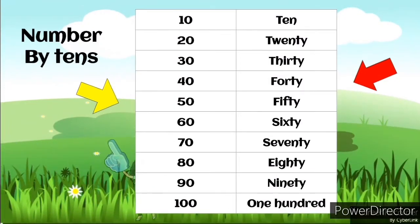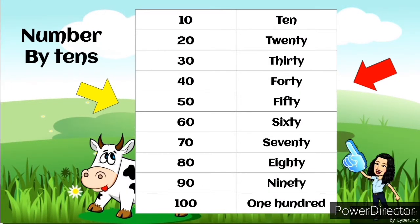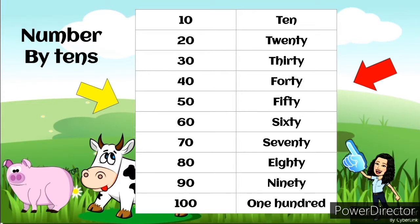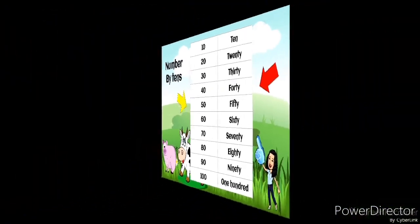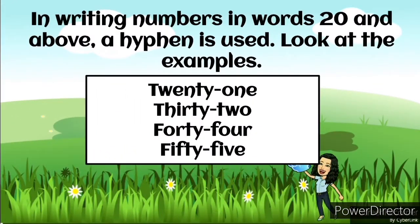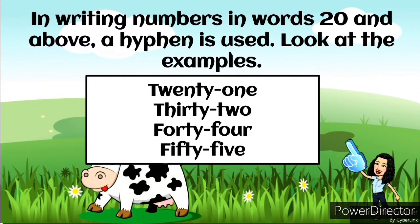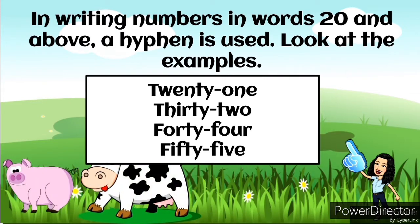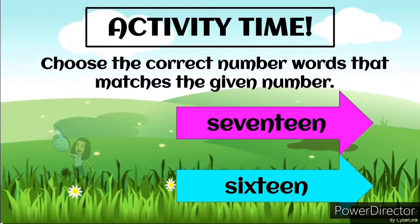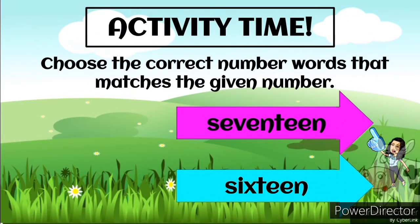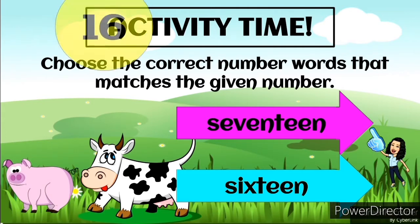There are also numbers by tens, written in number form and in word form: 10, 20, 30, 40, 50, 60, 70, 80, 90, and 100. In writing numbers in words for 20 and above, a hyphen is used. Look at the examples below: 21, 32, 44, 55. Now let's have an activity — choose the correct number words that match the given number.